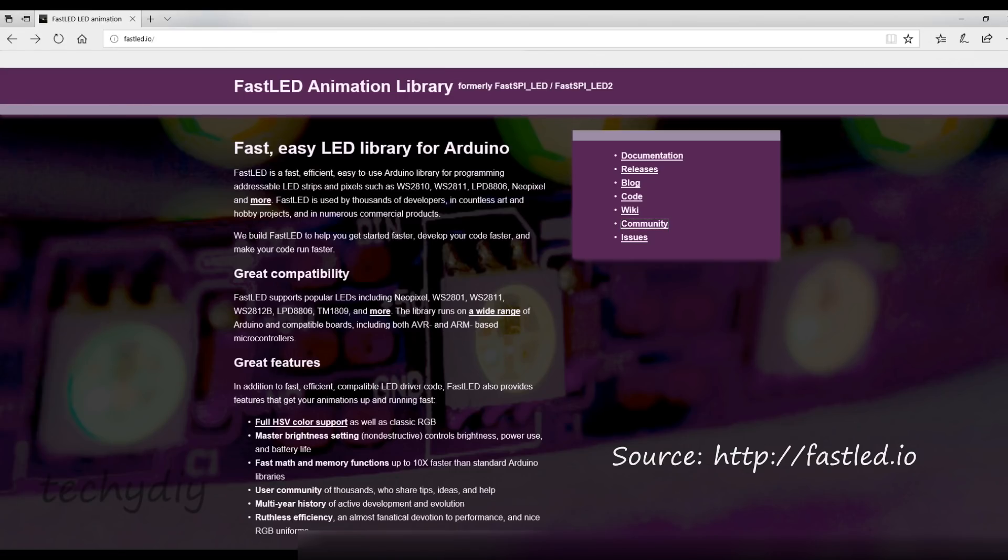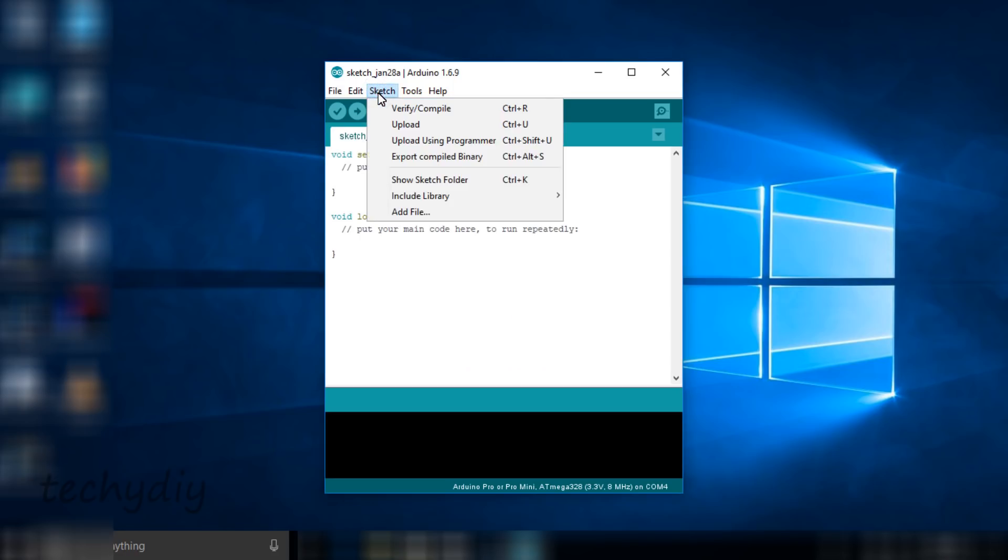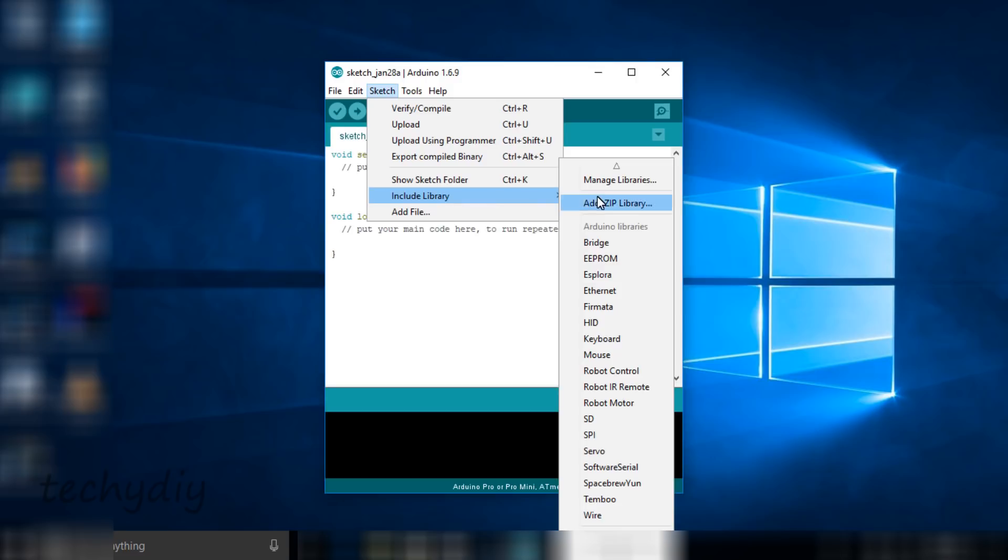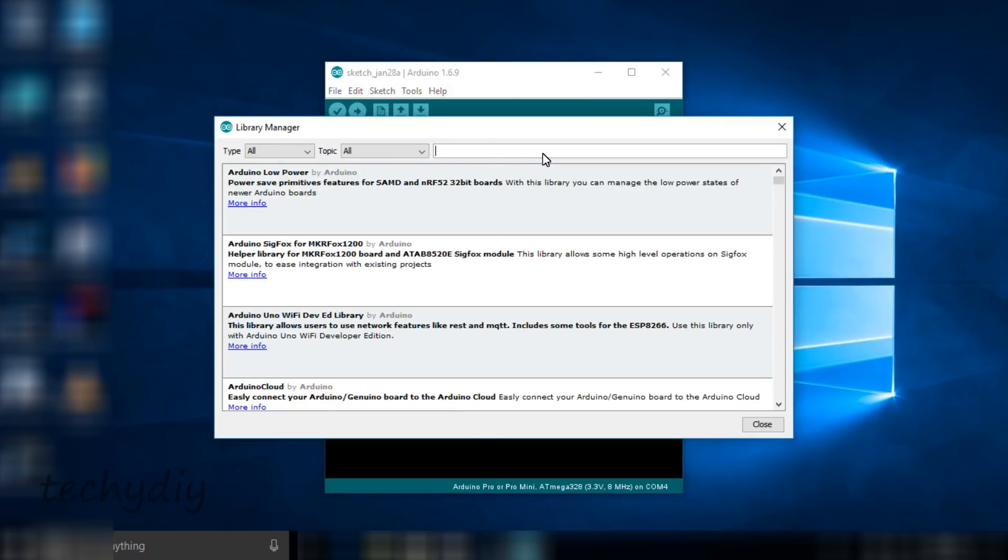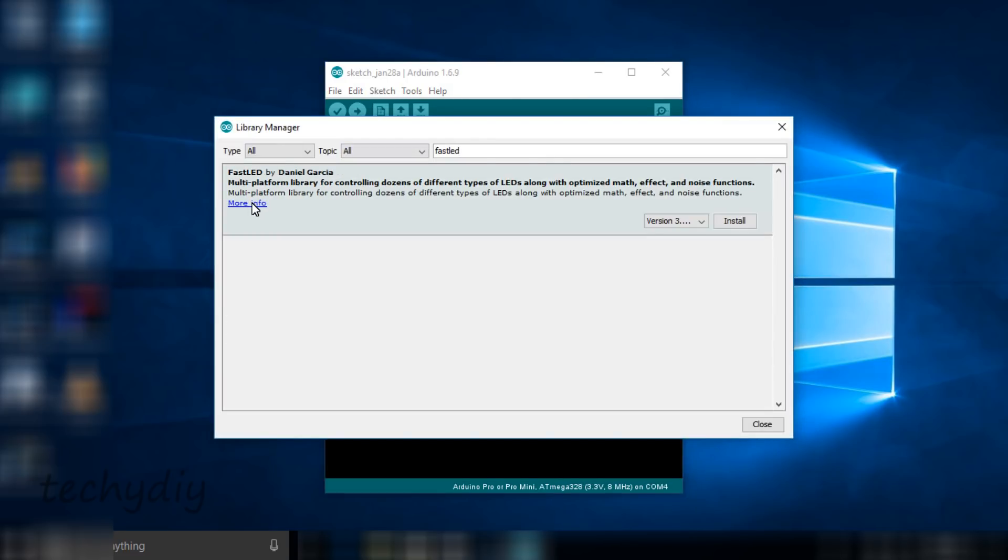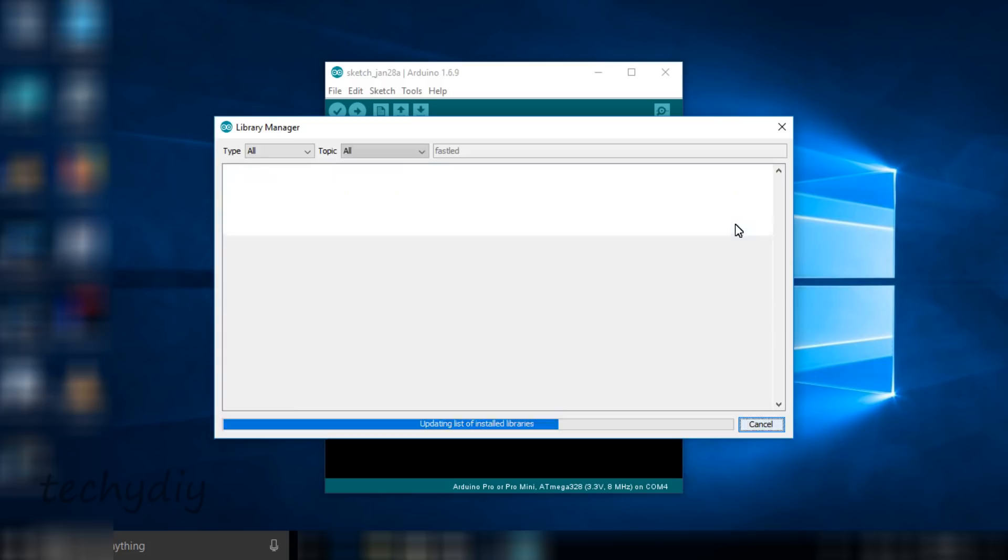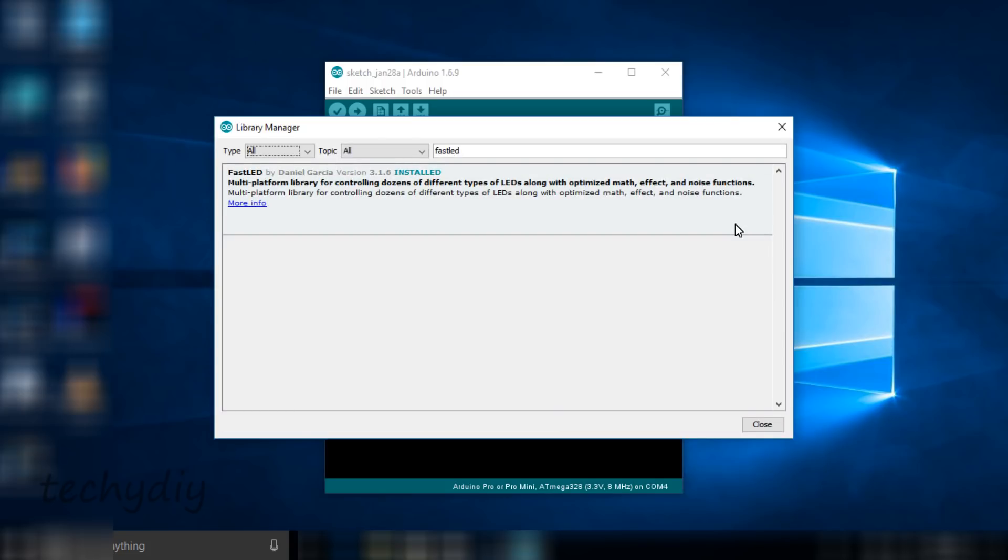To program the WS2812B LED strip I'm going to use the fast LED library. Select sketch from the menu. Include library. Manage libraries. And then enter fast LED in the search. And install. Alternatively the library can be downloaded in zip format from github and installed. Again I'll put a link to it in the description.